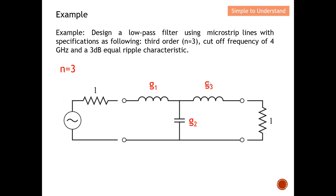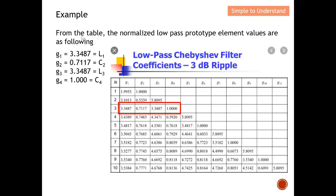Next, I find the values for g1, g2, and g3 from the Chebyshev 3 dB ripple table. From the table: g1 = 3.3487, g2 = 0.7117, g3 = 3.3487, and the load = 1. Note that for odd order n, the filter will be symmetric, which is why we prefer odd-order designs for this method.